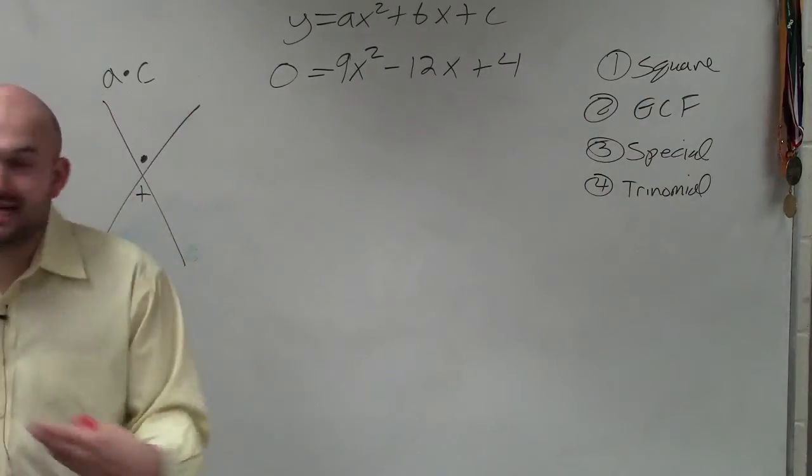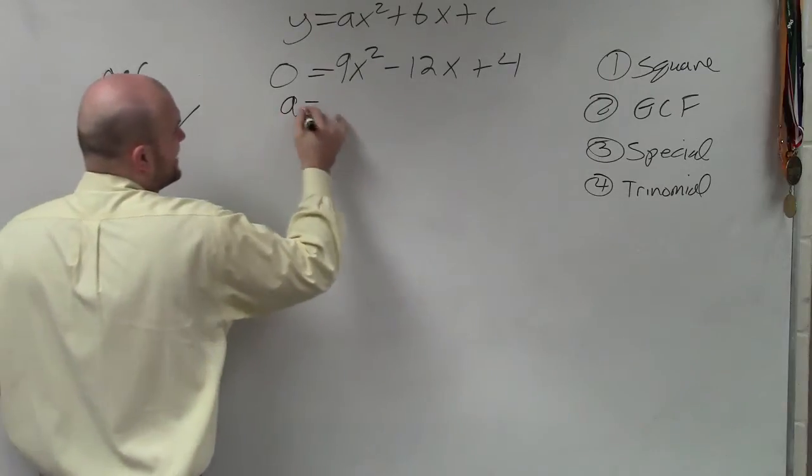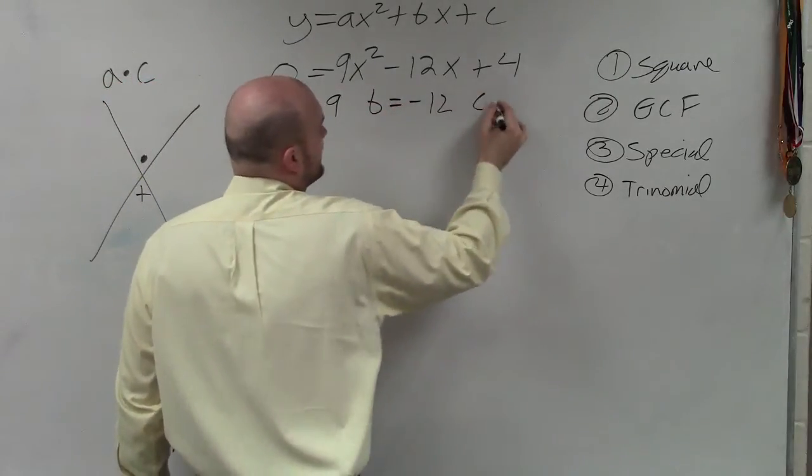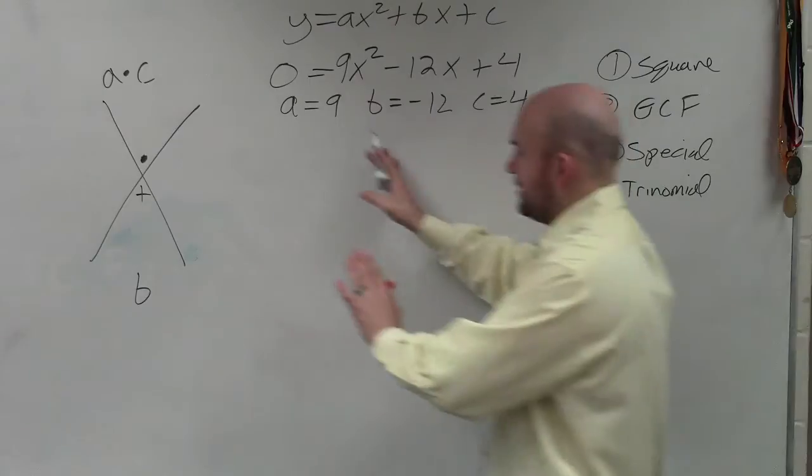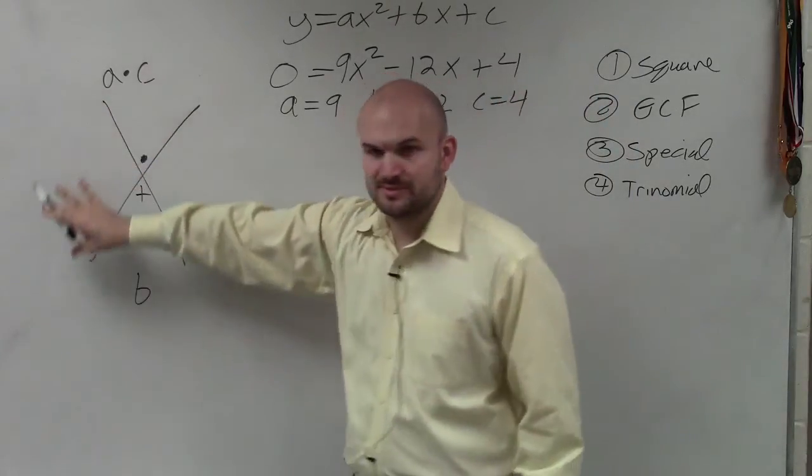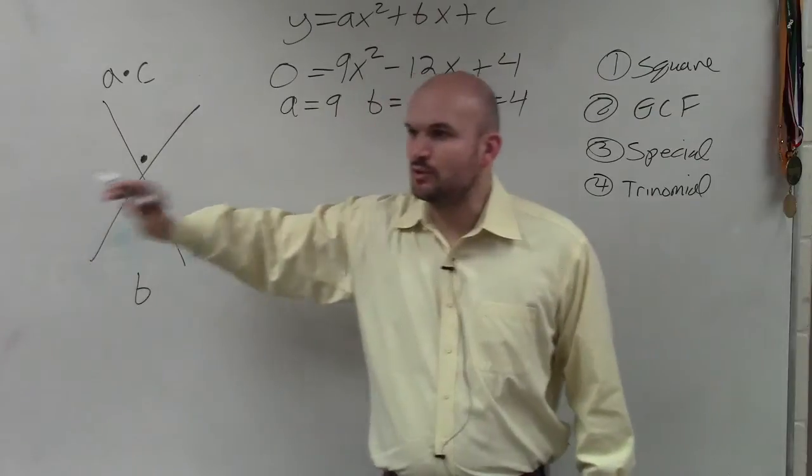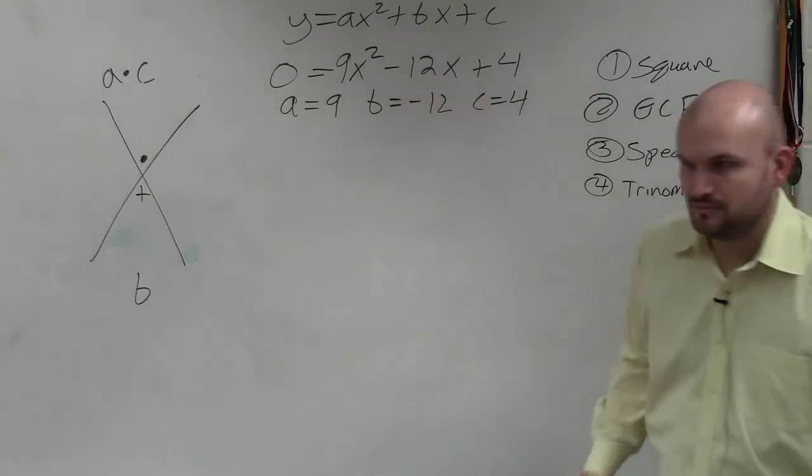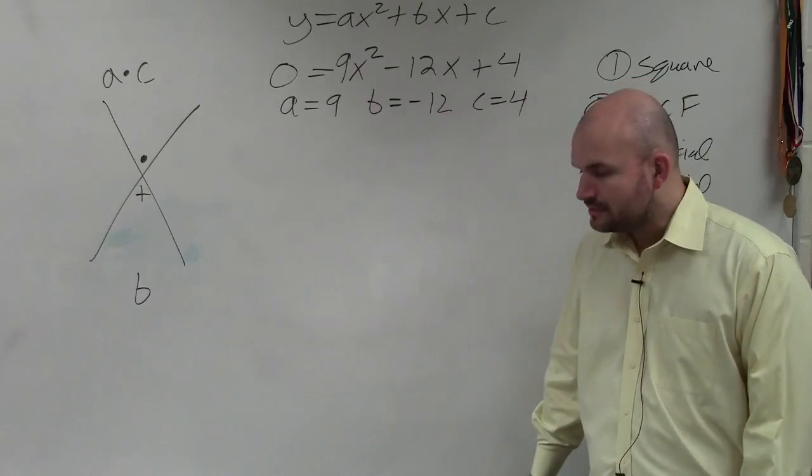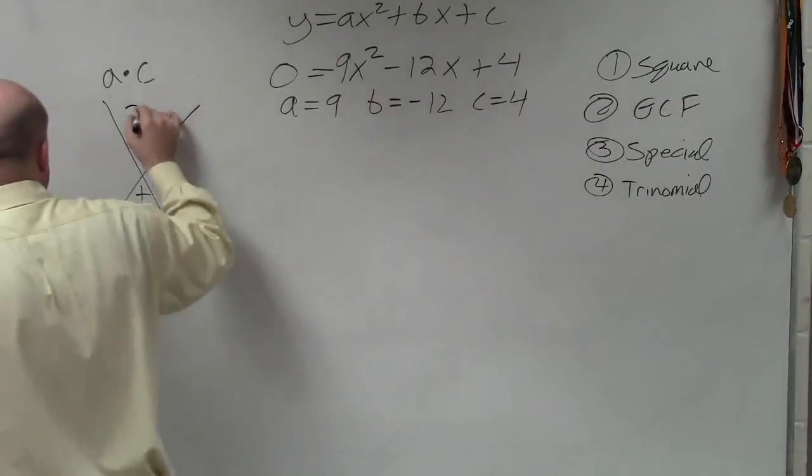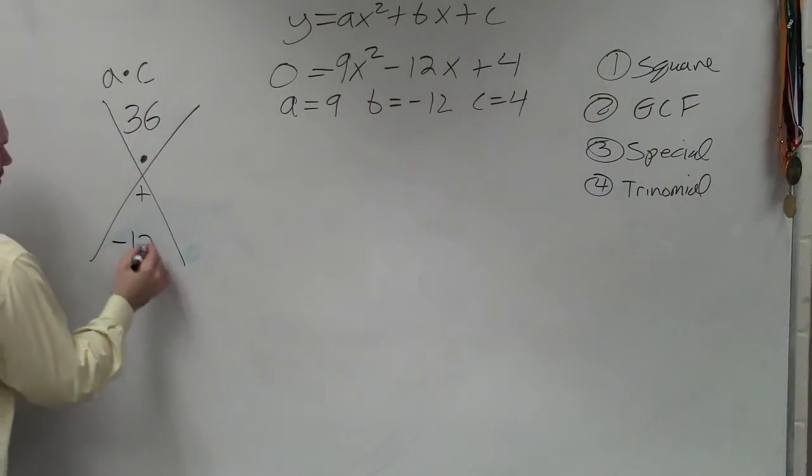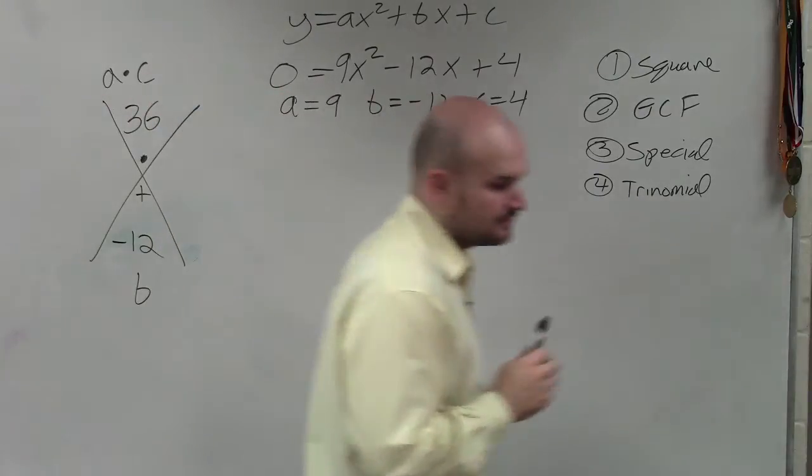So now what we need to do is we need to multiply a times c. So a, in this case, is 9. b is negative 12. And c is equal to 4. Does everybody agree with how I labeled my a, b, and c? Everybody feel OK with this? I haven't really done any math yet. I labeled an a, b, and c. And then I did this, which I'm telling you is a good visual way to be able to solve the problems. So we do a times c. 9 times 4 is 36. And then b is equal to negative 12.